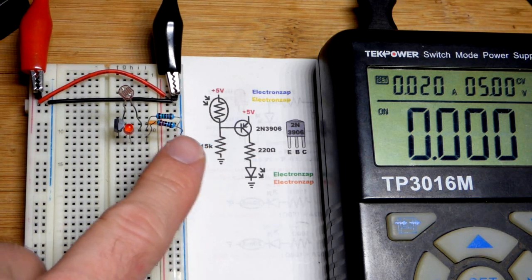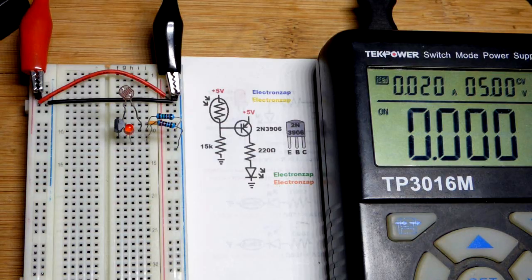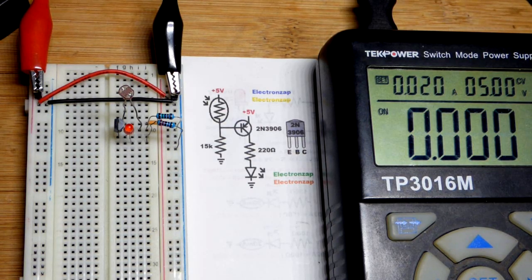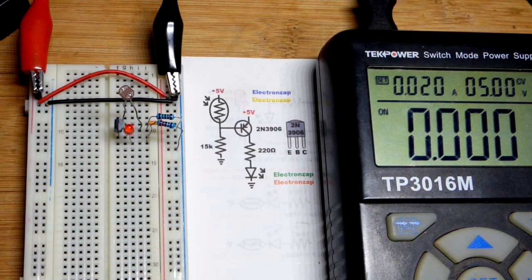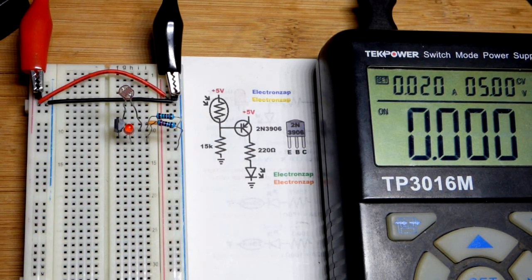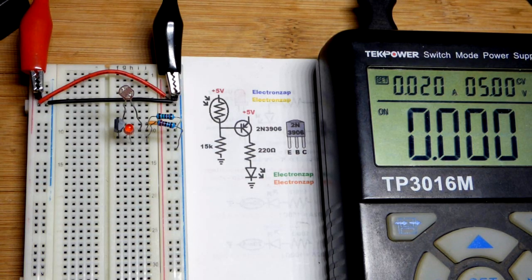Because ultimately who knows what you're going to need a light dependent resistor circuit for. You know, there's just millions of different things that you may use it for and so I can't get all of them. I can just show you the basics how it works and you can go from there. So that's it. Thanks for watching. Make sure you check out one of the other videos I'm posting on the screen and check out links down below. They all help out a lot. I'll see you in the next video.